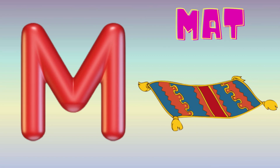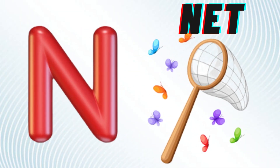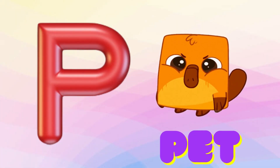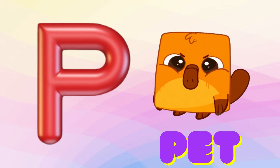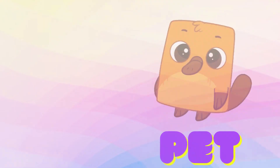M is for Mat, M-M-Mat. N is for Net, N-N-Net. O is for Orange, O-O-Orange. P is for Pet, P-P-Pet.